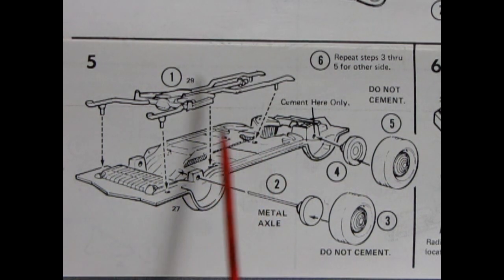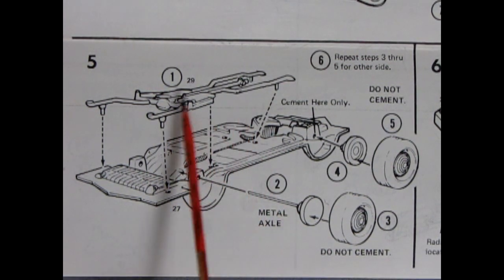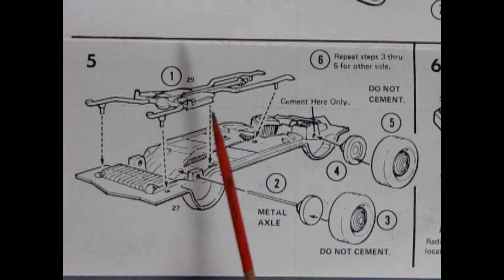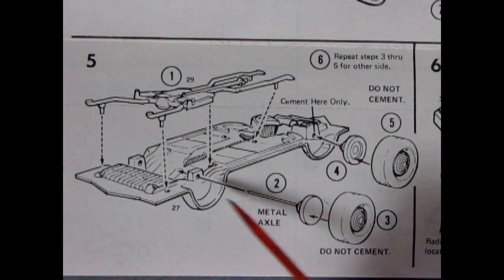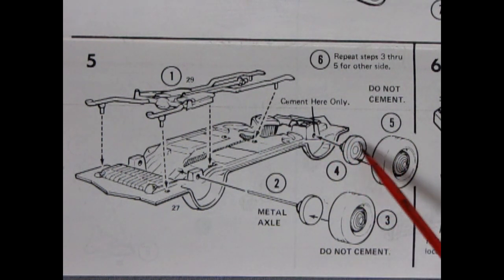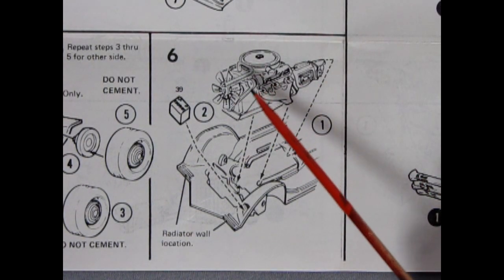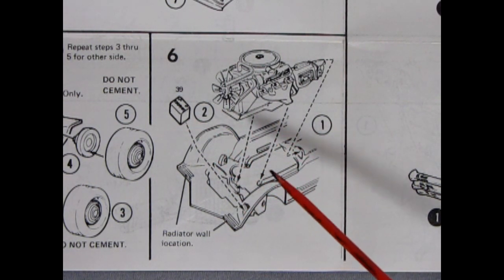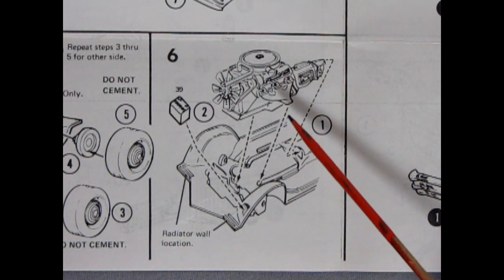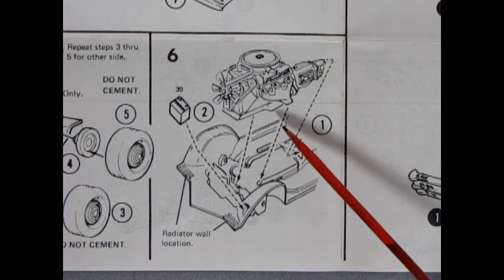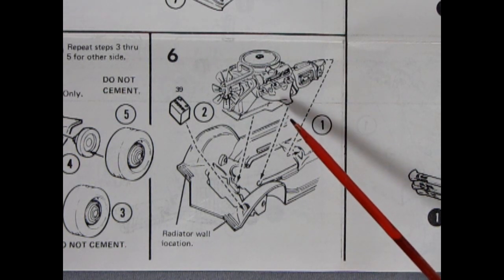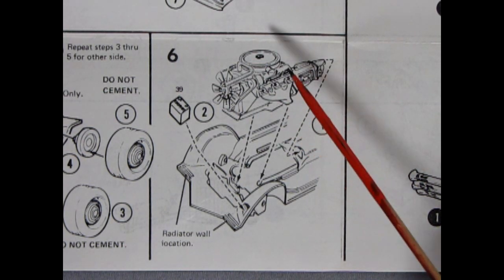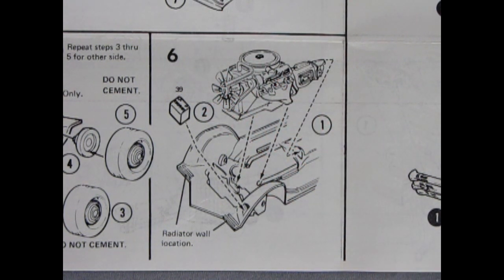Panel 5 shows our chassis with our differential and exhaust pipes and drive shaft all molded as one piece dropping into place. Then our metal axles go through these blocks, and the wheel backs will go into place, and our wheels will pop onto the wheel backs. Panel 6 shows our engine dropping into the chassis, and our battery going into place. Now one thing that I did say, and I made a mistake on this, is that I thought this was a Cadillac Eldorado. It is, in fact, a 1976 Pontiac Grand Prix.